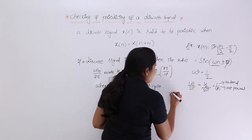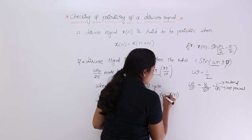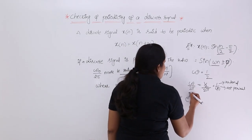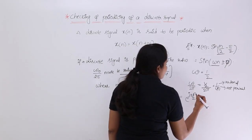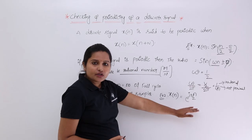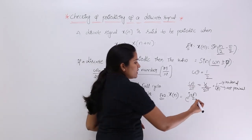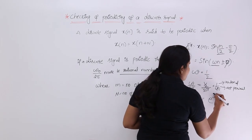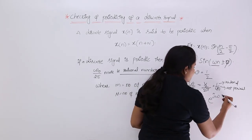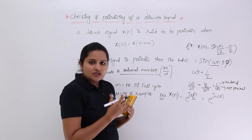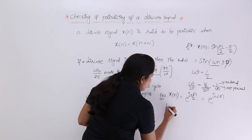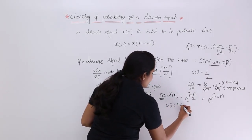Now for Example 2, the given discrete signal is x(n) = e^(jπn/2). To check whether this is periodic or not, compare it with the basic discrete complex exponential form e^(jωn). Comparing these two, ω = π/2.